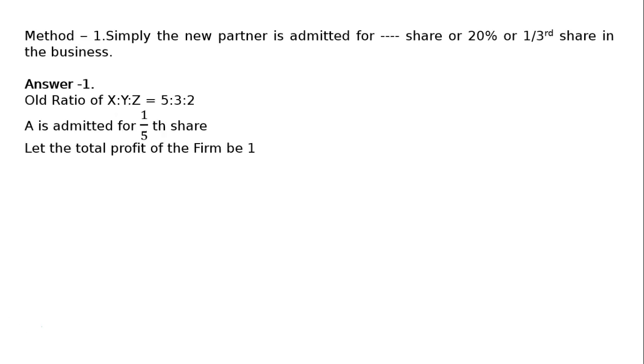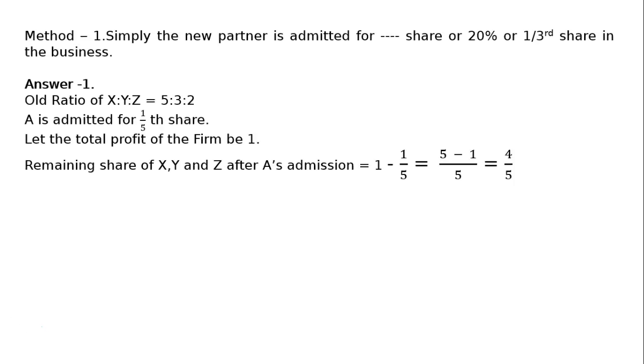Let the total profit share of the firm be 1. Remaining share of X, Y, and Z after A's admission = 1 - 1/5 = (5-1)/5 = 4/5.